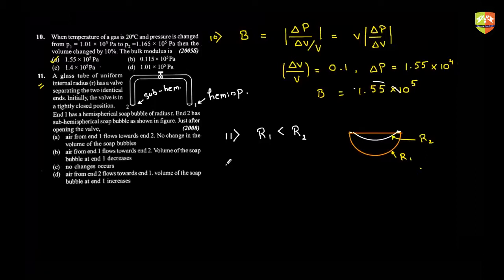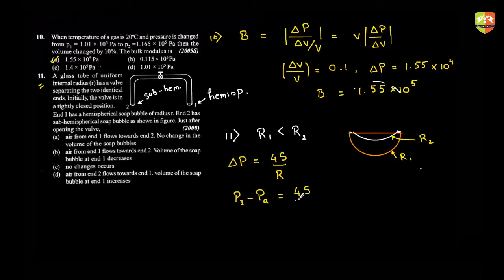Delta P for a bubble is 4s by r. Delta P is pressure inside minus pressure outside. Outside pressure is atmospheric pressure. So this should be equal to 4s by r1. My focus is to find p1, so I'll write it as p1 minus pa equals 4s by r1. This is my first equation.